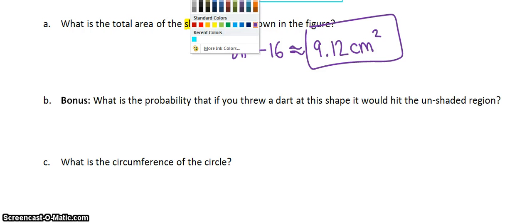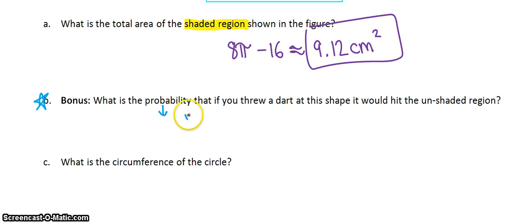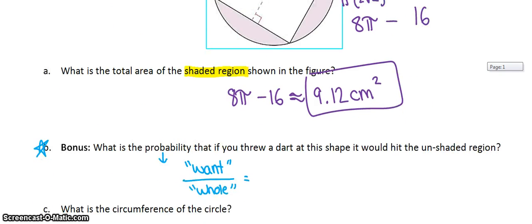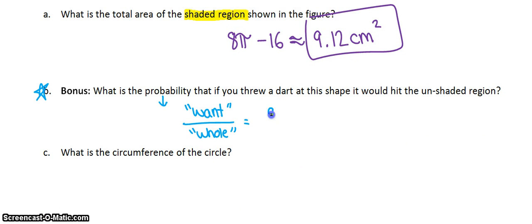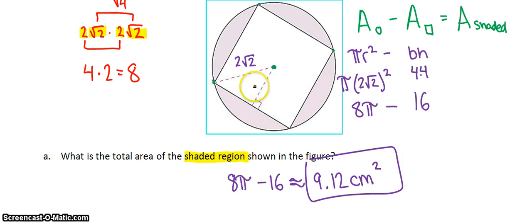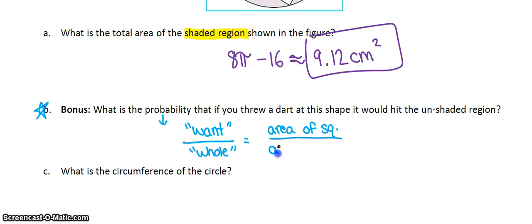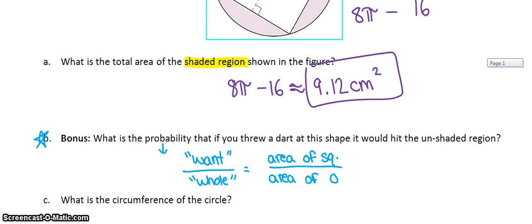Just for a bonus, it asks what the probability that you threw a dart at the shape. I'm going to leave this as a bonus, but give you a hint to get started. If you're calculating probability, we always do what you want, the total that you want, over the hole. What I want is it to land in the unshaded region, which is the square. So I want the area of the square. The hole is where it could land, so it could land in the whole circle. So I want the area of the circle. And if you do that, you can calculate the probability that that's going to happen.